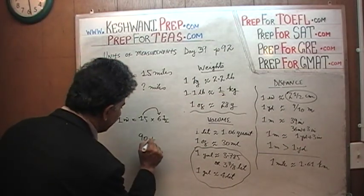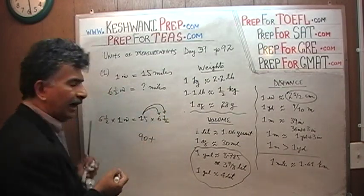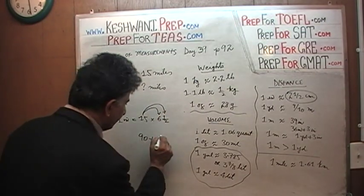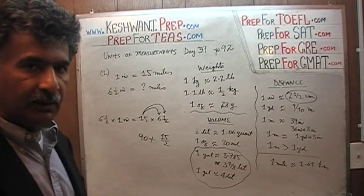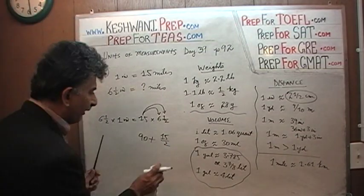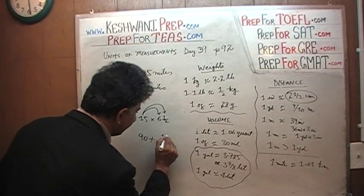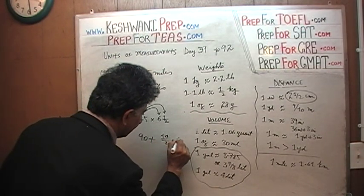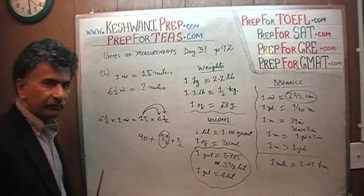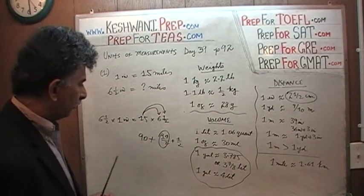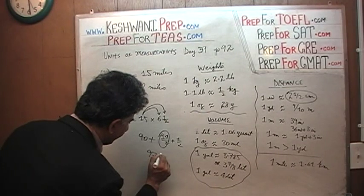90 plus 15 halves. How many are 15 halves? If you had 15 halves, that's same as 14 halves plus another half and 14 halves of course we know that if you have 14 halves that makes 7 whole so it's 97 and a half.